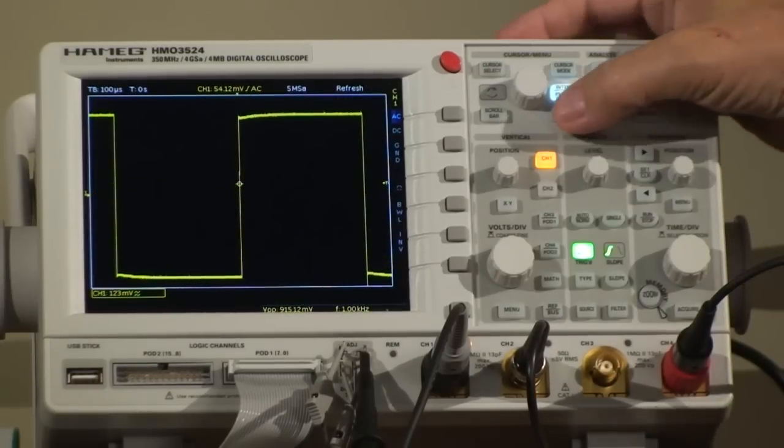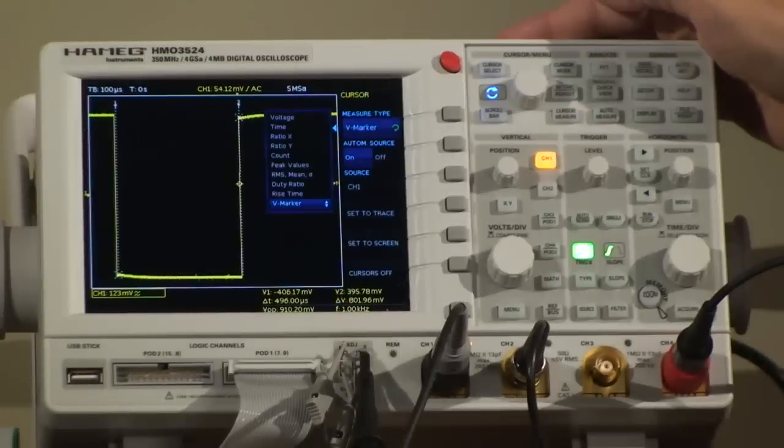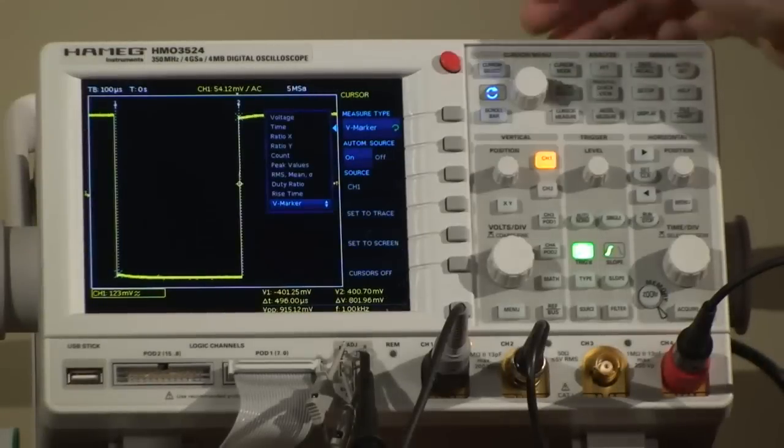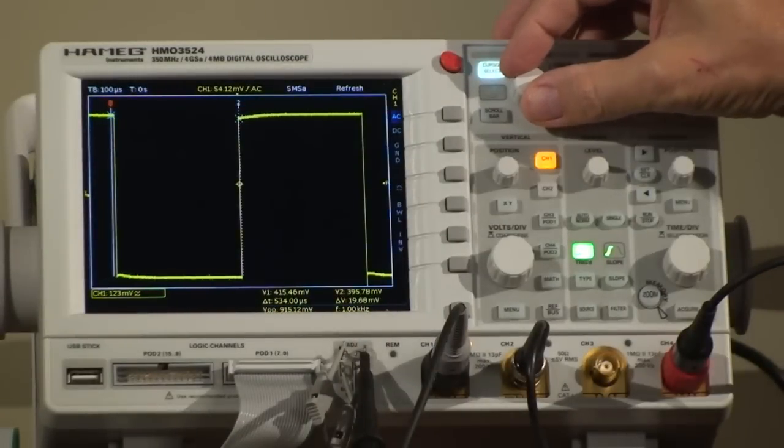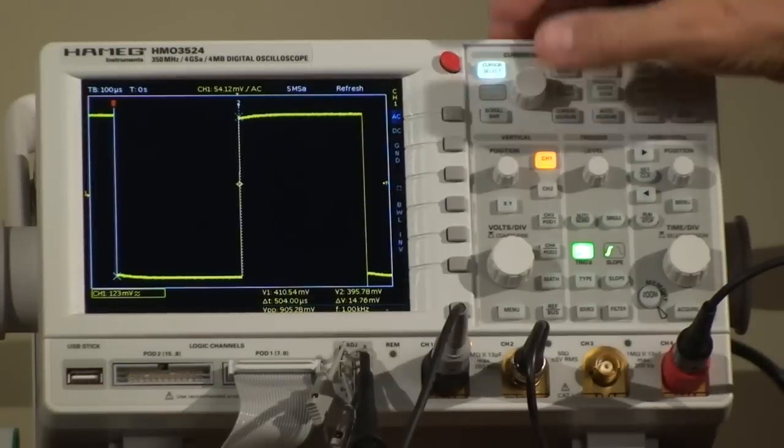There you go. So, cursors - very quickly you put a couple of cursors on there and immediately you see where the cursors are. I select now my left cursor. It's highlighted with the red dot on top.